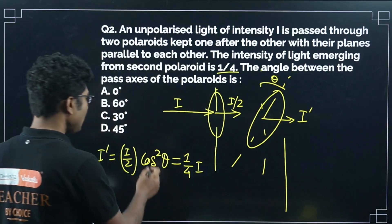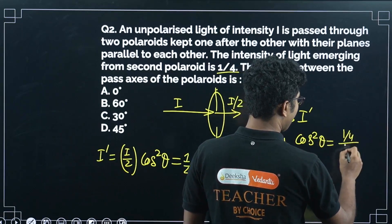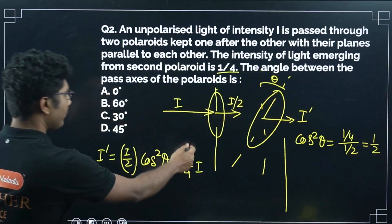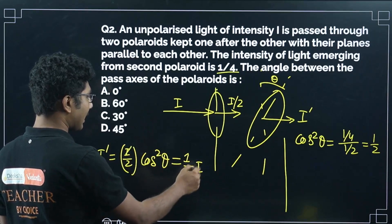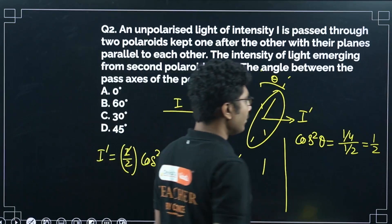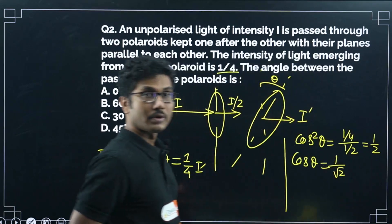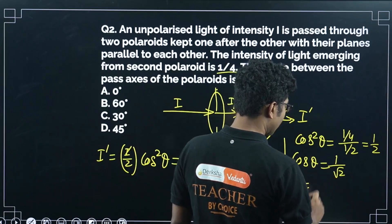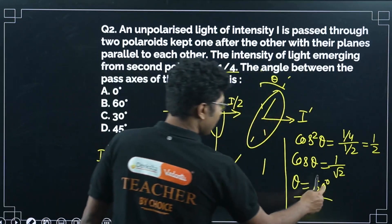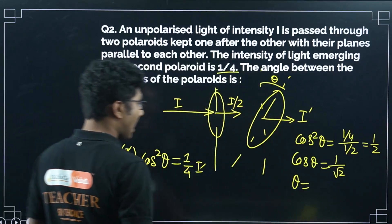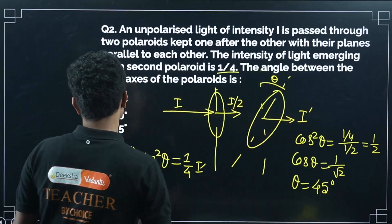From Malus's law: I_dash = (I/2) cos²θ = I/4. So cos²θ = (1/4)/(1/2) = 1/2, giving cos θ = 1/√2. Therefore θ = 45 degrees. Correct answer is option D.